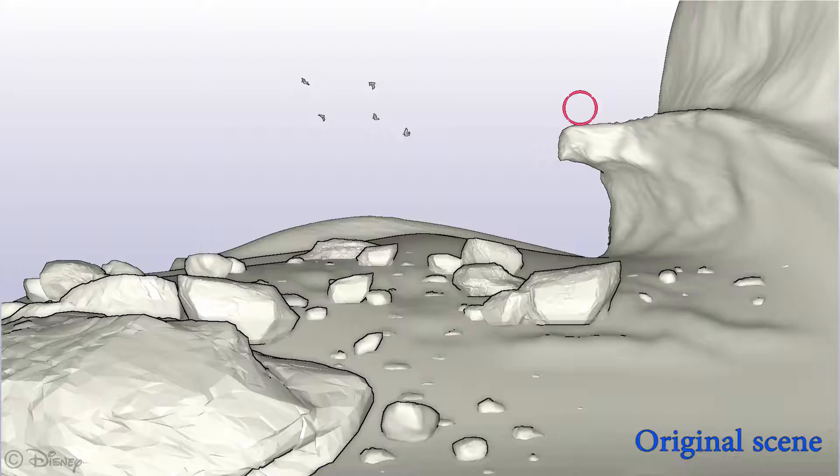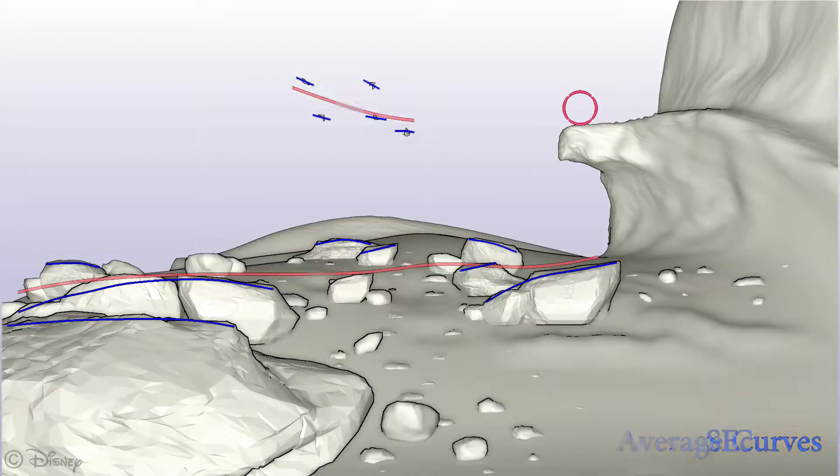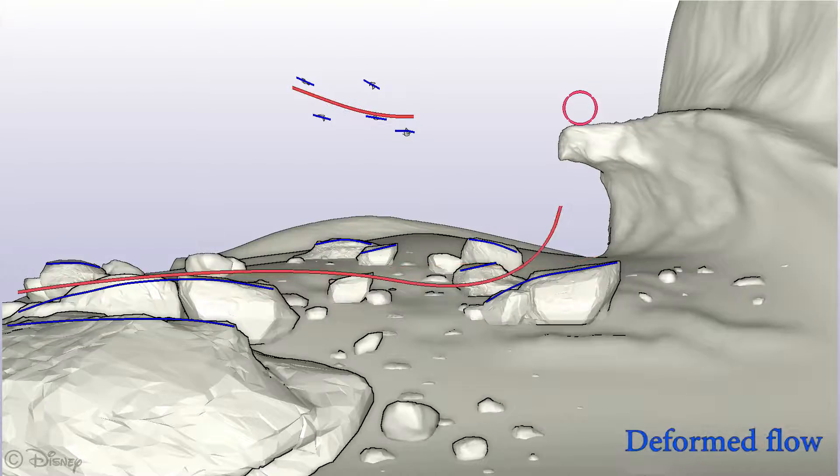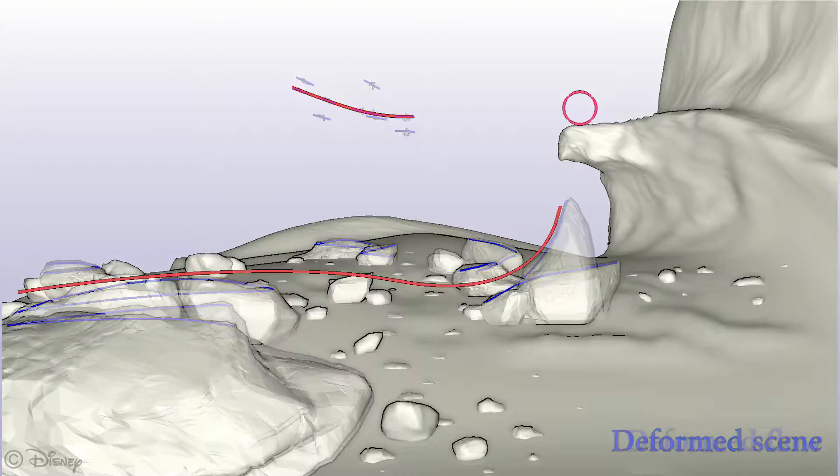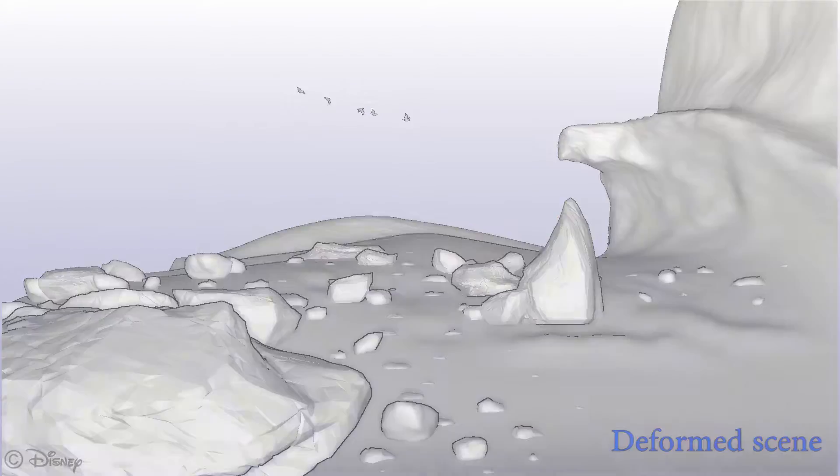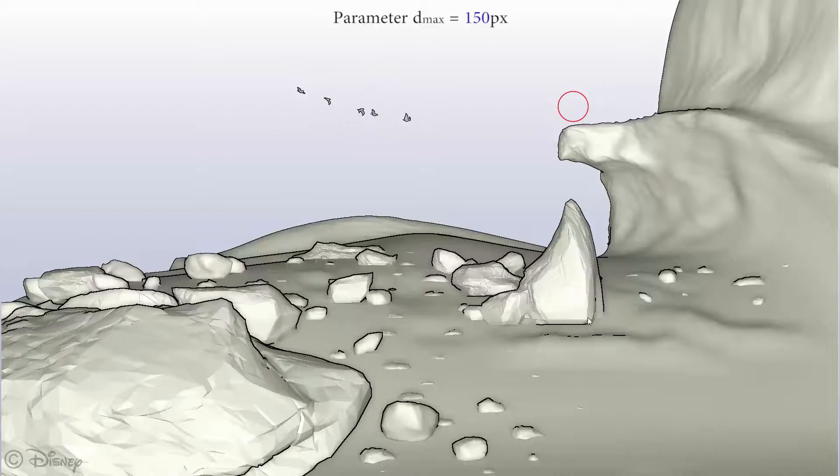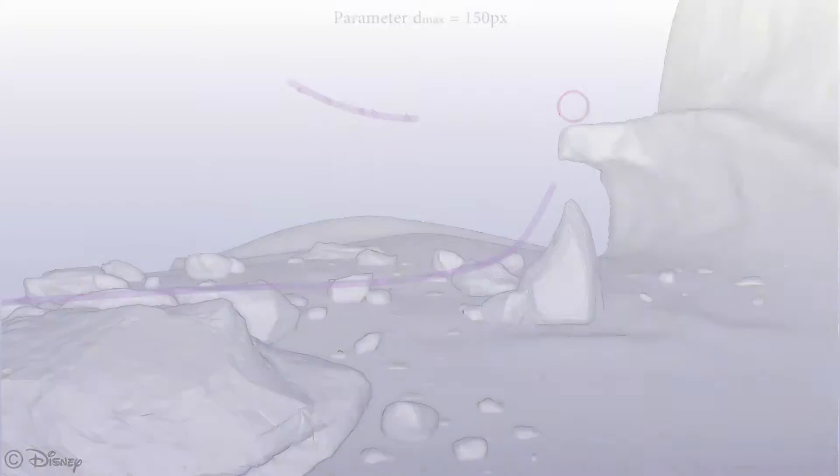We also allow the user to simply specify a center point that automatically generates coherent flow curves based on the scene configuration. Different kinds of flows can be explored via flow radius parameter. Please see our paper for additional details.